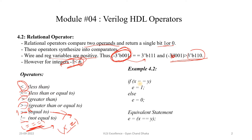If x == y then e is 1, else e is 0. The equivalent statement can also be written as the assignment e = (x == y), meaning if x == y is true, then e will get value 1, otherwise e will get value 0. This is how we can make use of relational operators in our Verilog design.